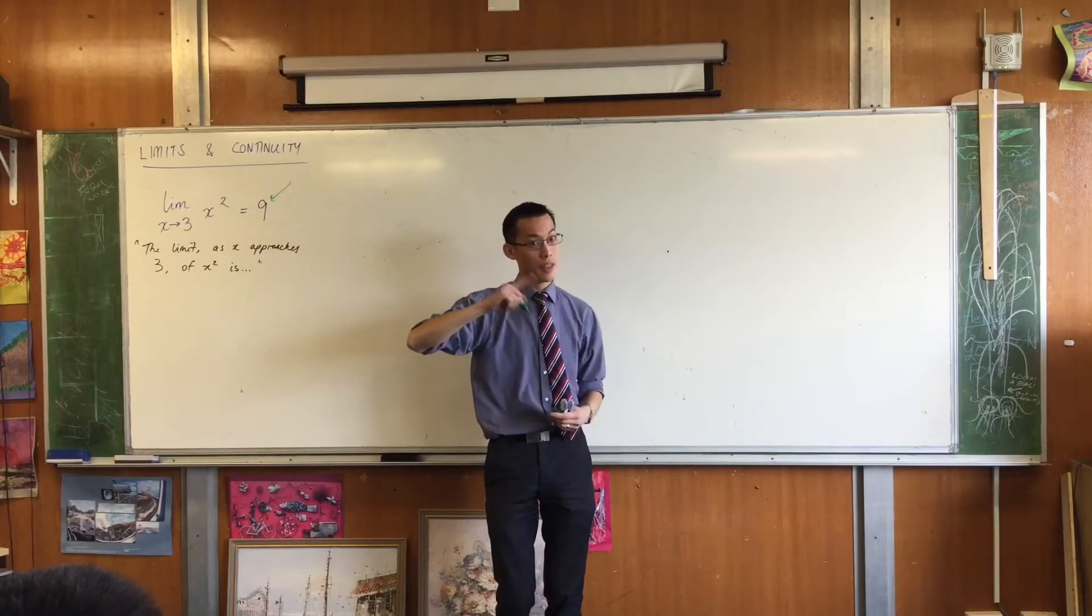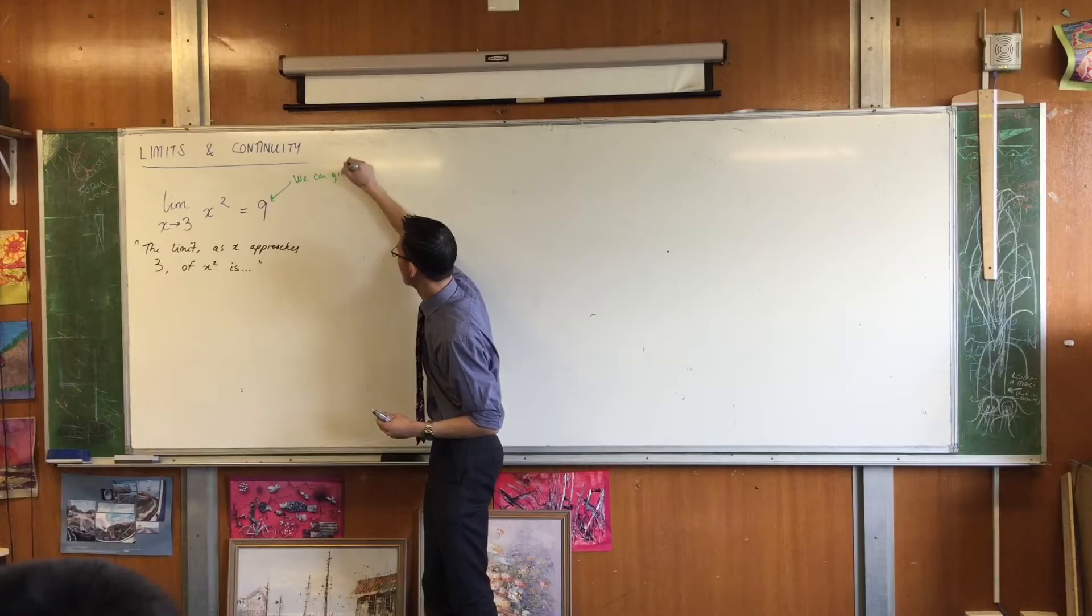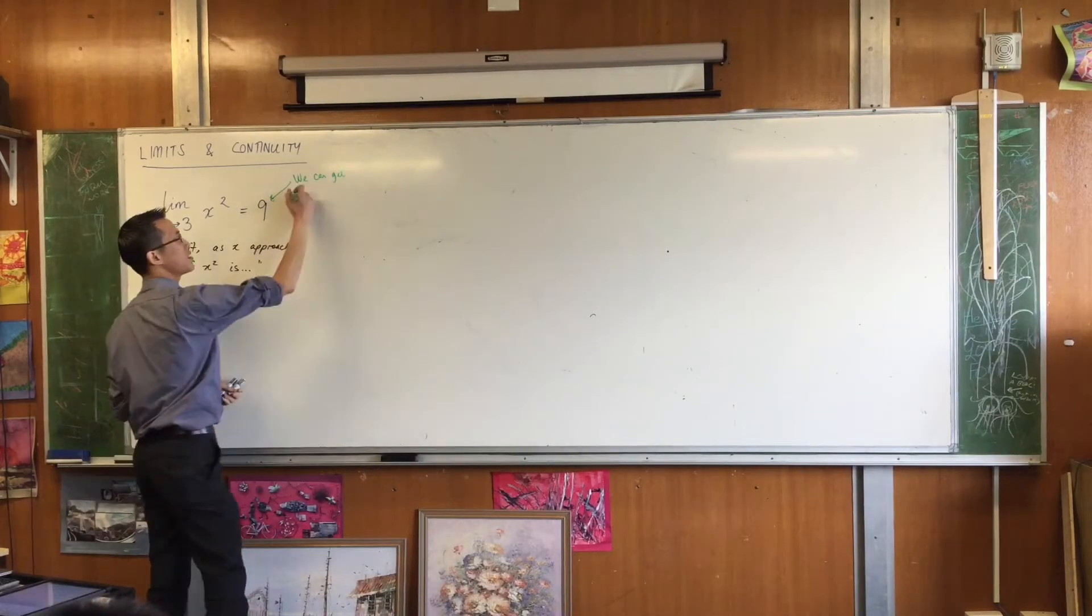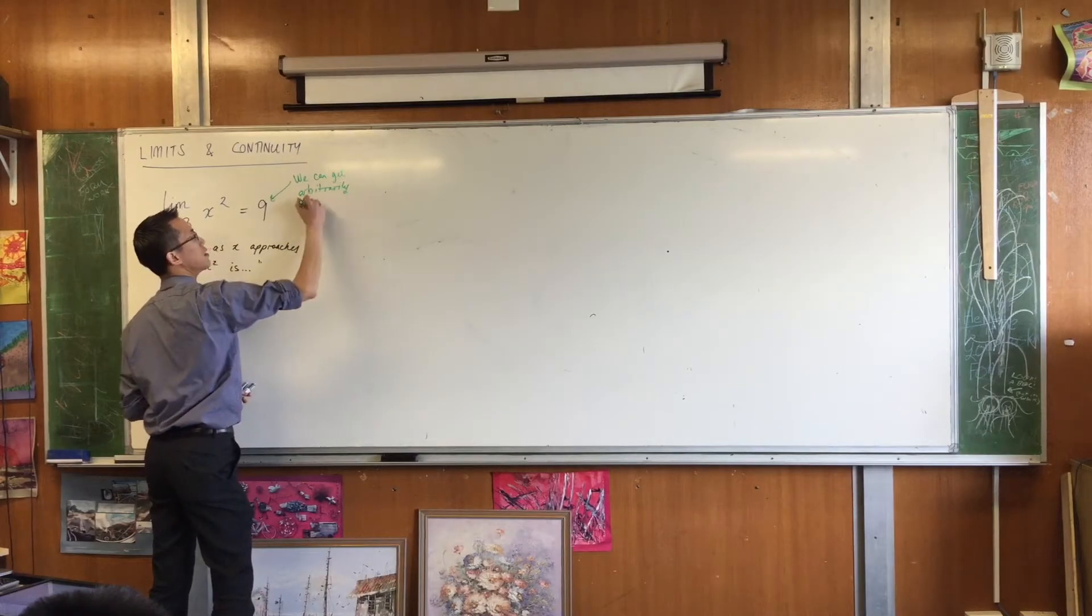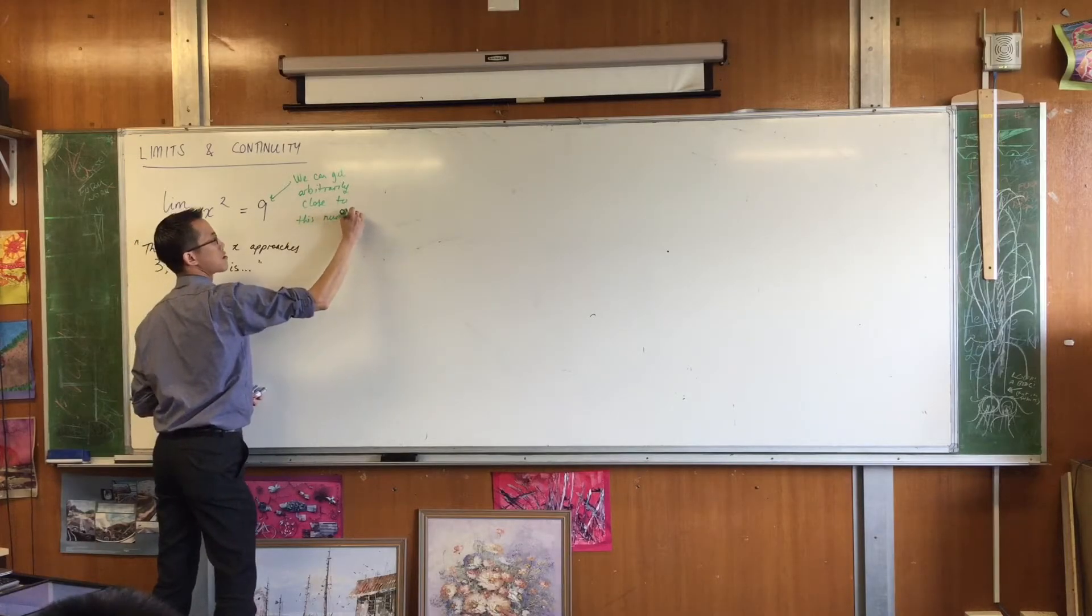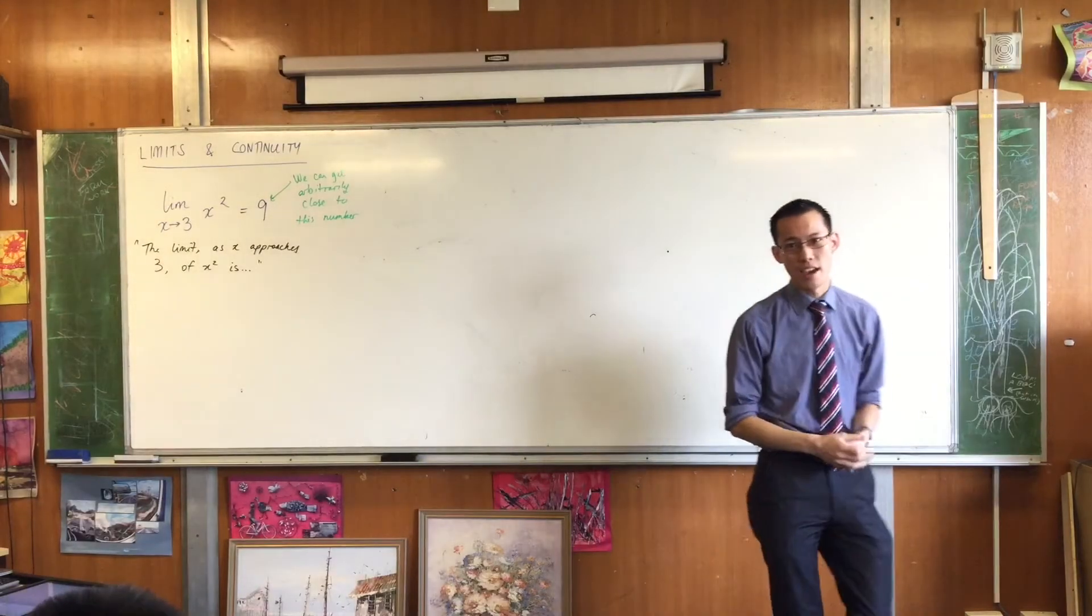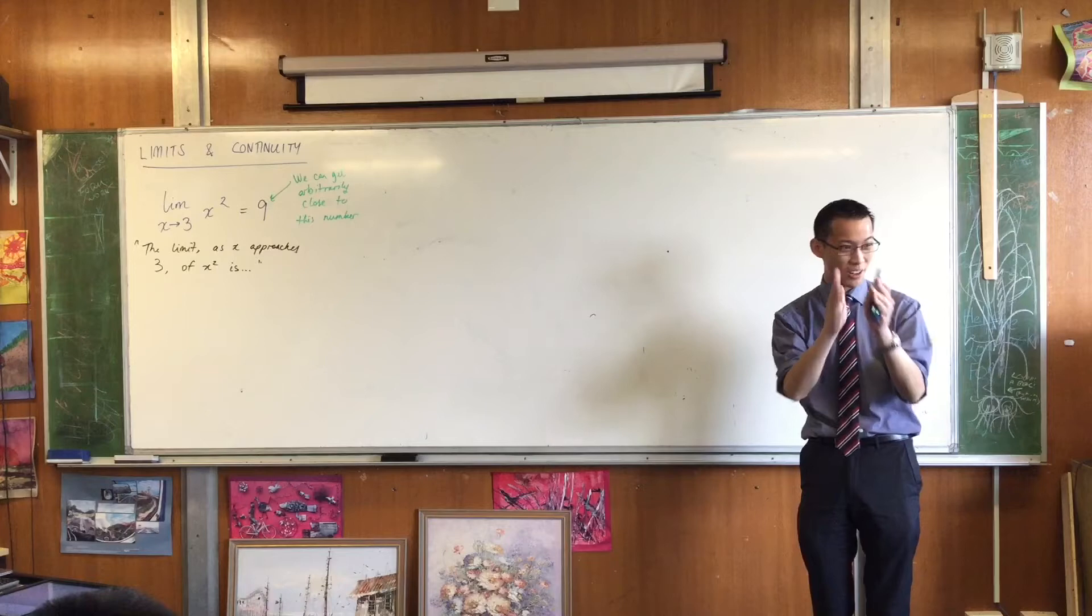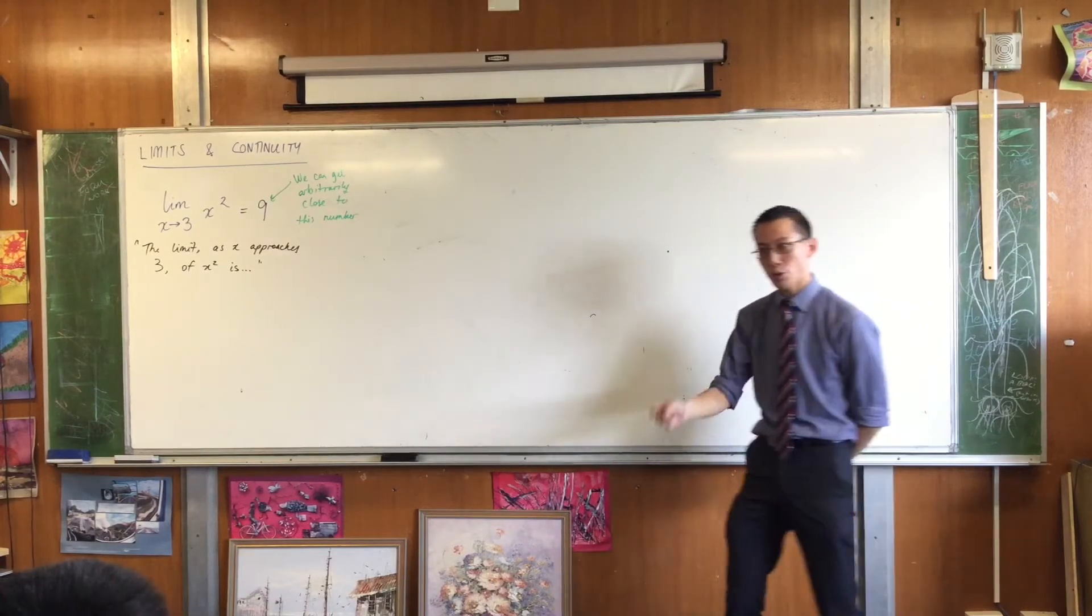The reason why 9 is the limit is because we can get, the mathematical way of saying it, the technical rigorous way of saying it is, we can get arbitrarily close to this number. So if I say, okay, how close would you like to get to nine? I want to get to 8.9999999999. That's how close I want to get.